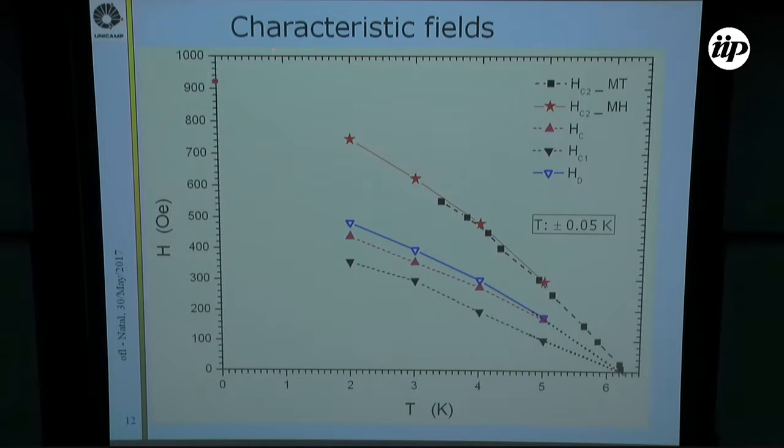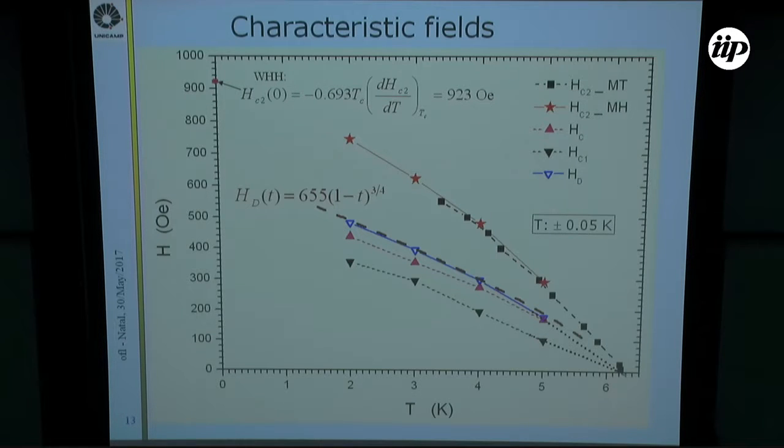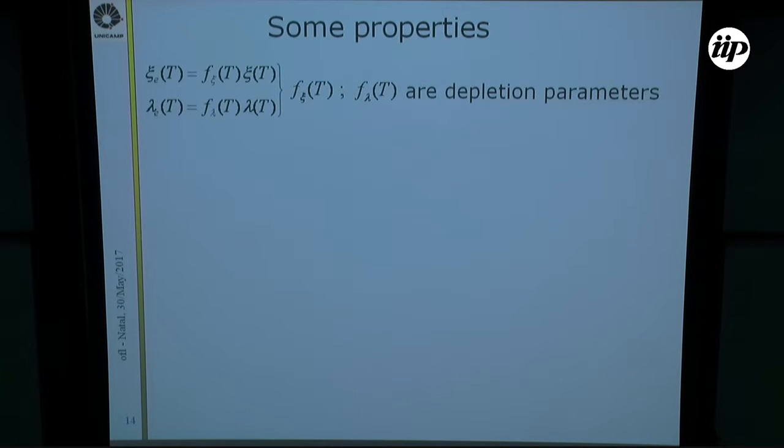We obtained some of the typical characteristic fields, like HC2 from the MT curves and from MH curves. The extrapolated value to zero temperature was calculated using the WHH formula. Also, the HC, the thermodynamic critical field, was calculated using this expression: the magnetic work equal to the condensation energy. These open blue triangles represent the crossover field that we identified in all measurements. Here I show a fit to this crossover field, and this will be used later.